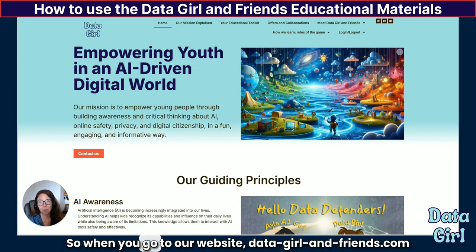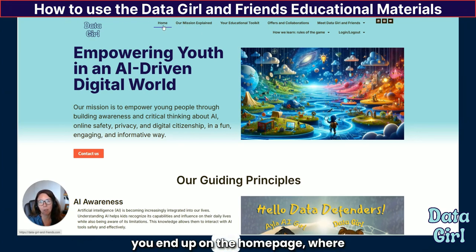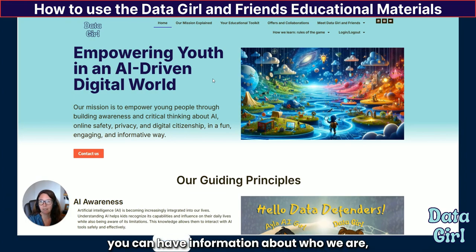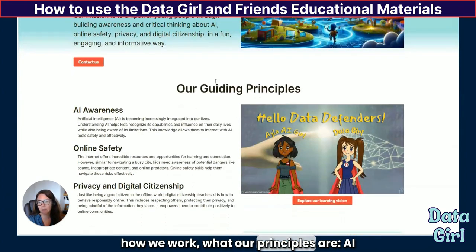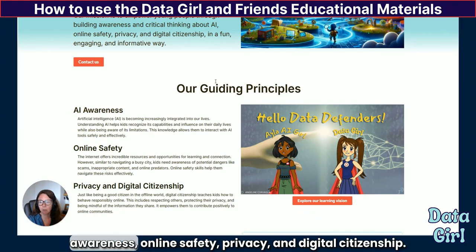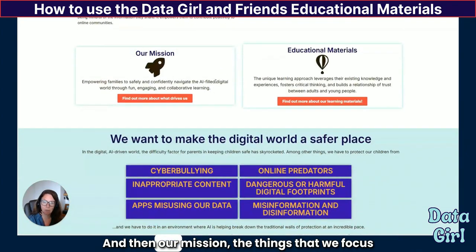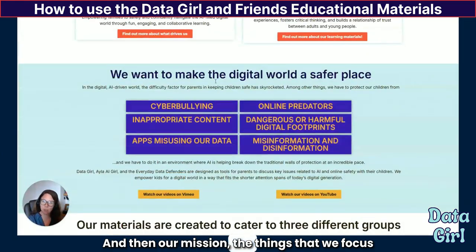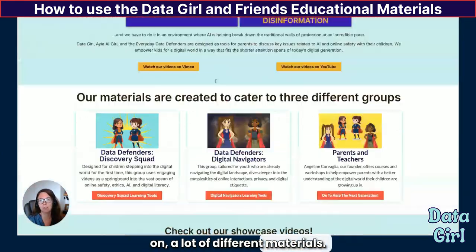When you go to our website, datagirlandfriends.com, you end up on the homepage where you can find information about who we are, how we work, what our principles are, AI awareness, online safety, privacy, and digital citizenship. And then our mission, the things that we focus on, and a lot of different materials.